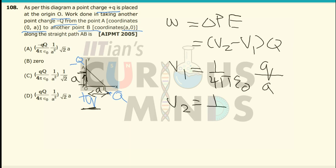And V2 will be equal to 1 by 4 pi epsilon 0, Q divided by A.